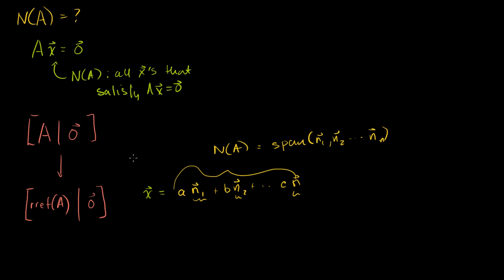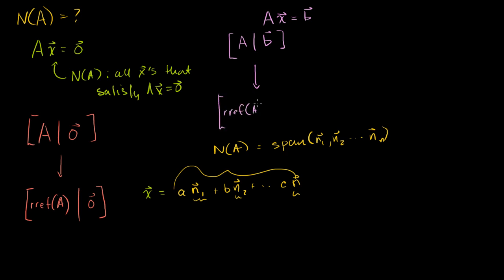What about the case when you're solving the inhomogeneous equation? The inhomogeneous equation looks like this: if I want to solve AX is equal to B, I would do something very similar. I will create an augmented matrix with A on the left-hand side and B on the right-hand side, and perform a bunch of row operations to put A into reduced row echelon form. Whatever operations I did on A, I also have to do to B, so I'll have some new vector — let's call it B prime.